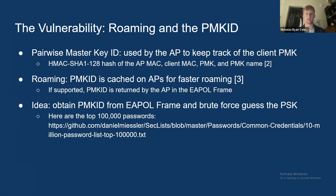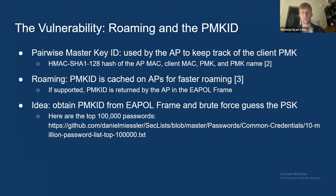The PMKID provides a unique vulnerability — it's the pairwise master key ID. If we obtain that PMKID, we can get the PMK, which is the Wi-Fi password. To enable faster roaming, the PMKID is cached on APs, and if we find a network that supports it, the EAPOL frame will return that PMKID. The main idea of this attack is to obtain the PMKID and then brute force it to get the Wi-Fi password.